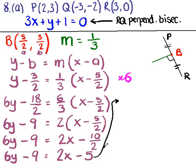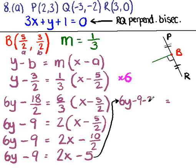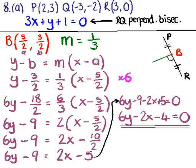We had 6y minus 9 equals 2x minus 5. Bringing everything over to the left-hand side, we get 6y minus 9 minus 2x plus 5 equals 0. The minus 9 and plus 5 simplify, giving us the final answer.